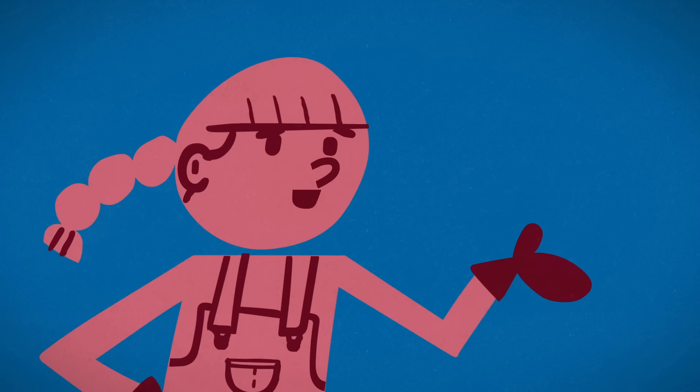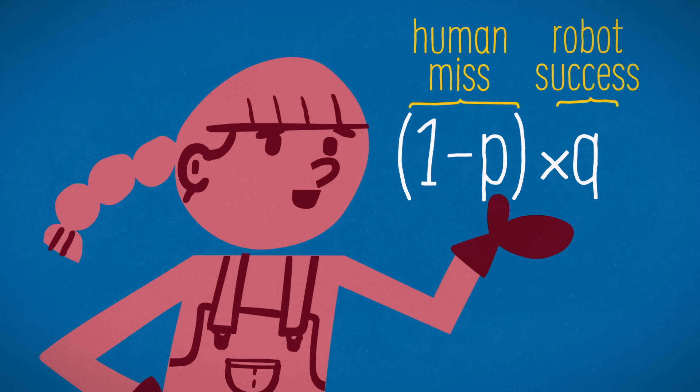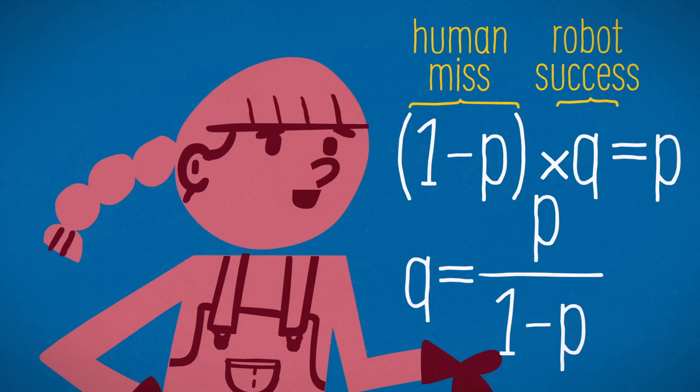We could bypass geometric series by starting with this reasoning. The robot's chances of winning in the first round is 1 minus P times Q. And so if we want that chance to match the human's first round chance, we want it to equal P, making Q P over 1 minus P.